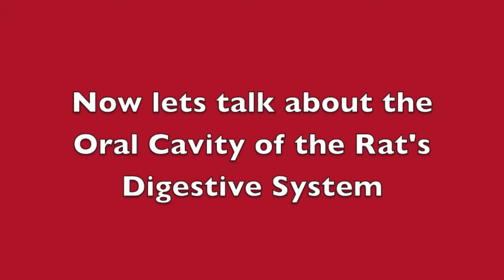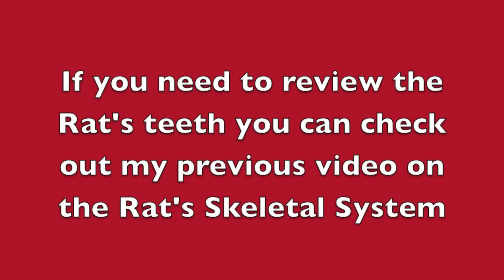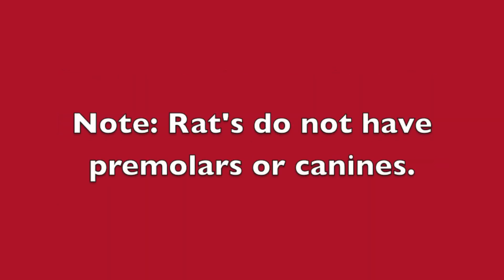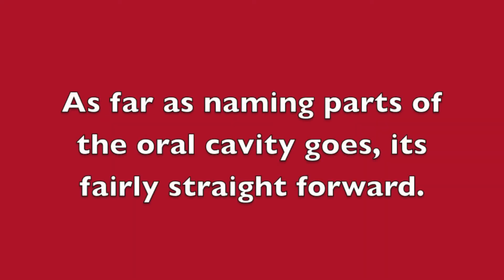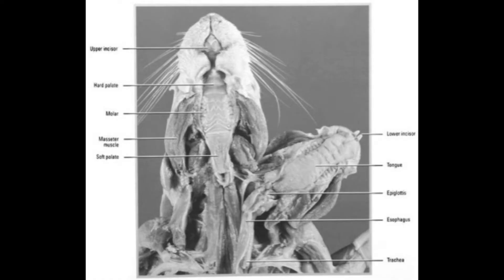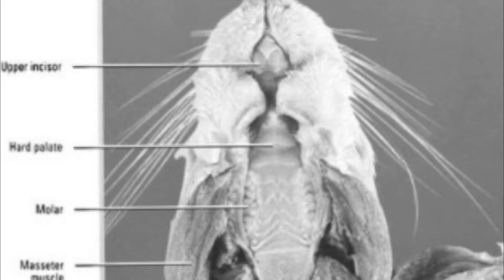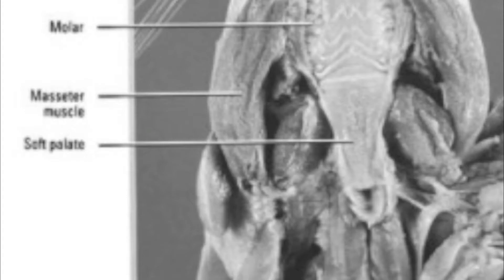Now let's talk about the oral cavity of the rat's digestive system. If you need to review the rat's teeth, you can check out my previous video on the rat's skeletal system. Note, rats do not have premolars or canines. As far as naming parts of the oral cavity goes, it's fairly straightforward. The bony roof of the mouth is called the hard palate. The palate separates the nasal and oral cavities.